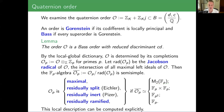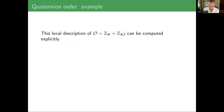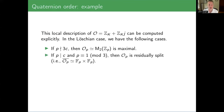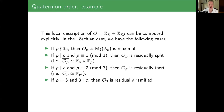To show you a little flavor of what I mean by understanding the local description, let's do it in the Loeschian case. If I take a prime P that does not divide 3C, then the order is maximal. If P divides C and P is 1 mod 3, then it's residually split. If P divides C and P is 2 mod 3, then it's residually inert. And if P is 3 and 3 divides C, then 𝒪₃ is residually ramified. It's almost like splitting of primes, but it's in terms of the Jacobson radical.